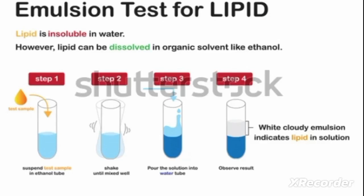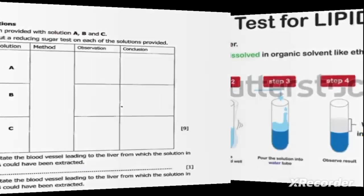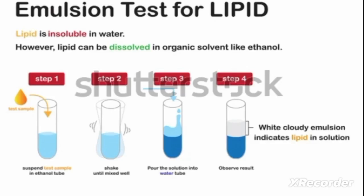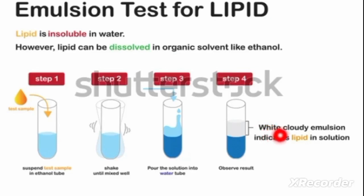During the emulsion test, we use alcohol. When alcohol has been added to the sample suspected to contain lipids or fats, an emulsion will form. Lipids are insoluble in water; however, they can dissolve in alcohol. The white cloudy emulsion will indicate the presence of lipids. If the white cloudy emulsion is not observed, then lipids are absent.